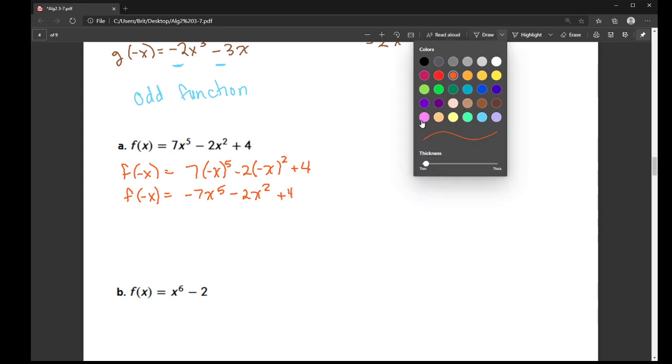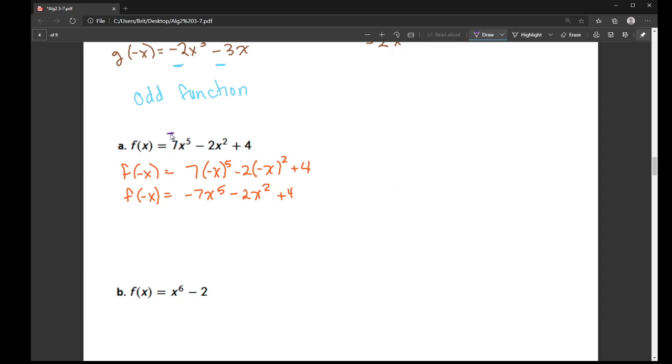So let's look at our signs. So I have a positive, a negative, and a positive. Down here, I have a negative, negative, positive. So the first one changed, and the second two didn't. So this is neither even nor odd.